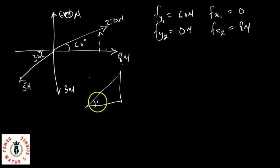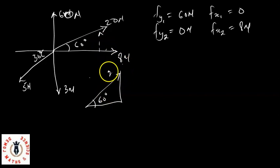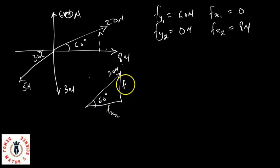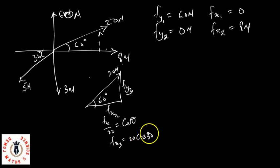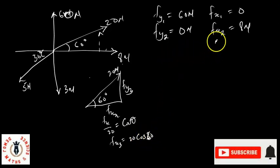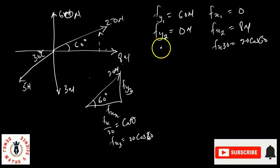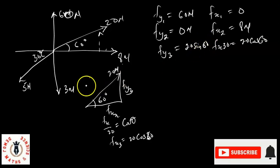For the 20 newtons, we can use SOH-CAH-TOA — if you missed our lesson on that, we'll place a link in the description below. Here, Fx3 over 20 newtons equals cosine theta, so Fx3 equals 20 cos 60. And Fy3 equals 20 sine 60.